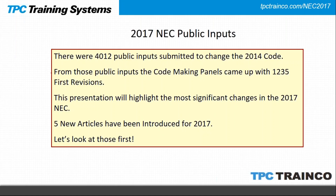There were 4,012 public inputs submitted. From those, the code-making panels came up with over 1,200 first revisions, and then after public comments, the second revisions were finalized. We're going to look at some of the most significant changes — not all of them — but the highlights. Importantly, there are five new articles, so let's take a look at those first.